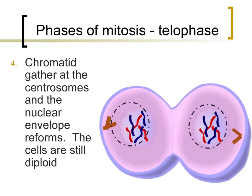During the final phase of mitosis, telophase, which occurs after anaphase, chromatids gather towards the centrosomes and a nuclear envelope reforms. At the end of this process, the cell is still diploid. Even though half of the genetic material ends up in each of the newly formed cells, all of the information is still there. Since each of the chromatids in a chromosome contains the exact same information, no genetic material is lost.